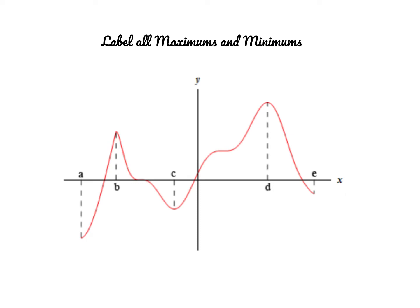Looking at a picture of a graph, let's see if we can label all of the maxes and mins and determine what type they are. This is the absolute lowest y-value of my entire graph, and it is on an endpoint, and that's okay. So we can call f of a an absolute minimum. Now let's determine an absolute maximum — I see this is the highest y-value of the graph, so f of d would be an absolute maximum.